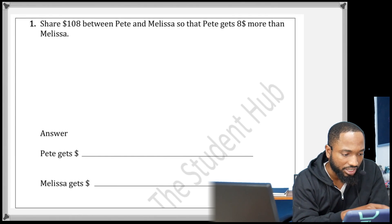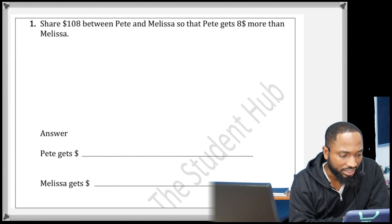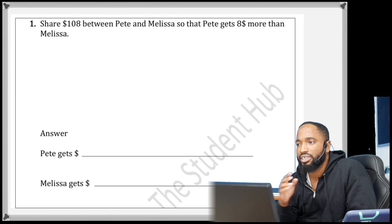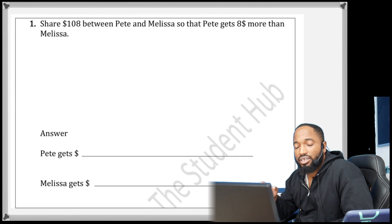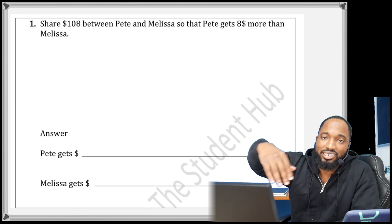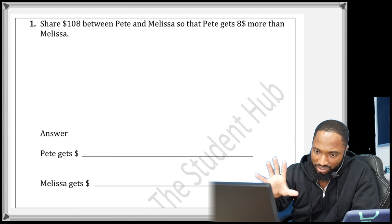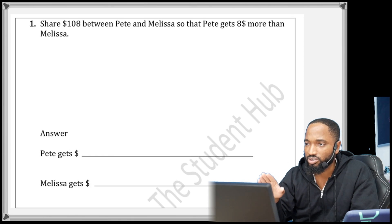Let's take a look at this question here. Share $108 between Pete and Melissa so that Pete gets $8 more than Melissa. So you can see the excess is $8. This one is easy. You can probably do this in your mind.